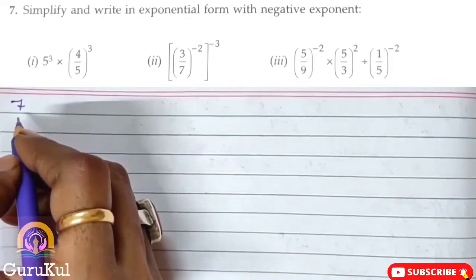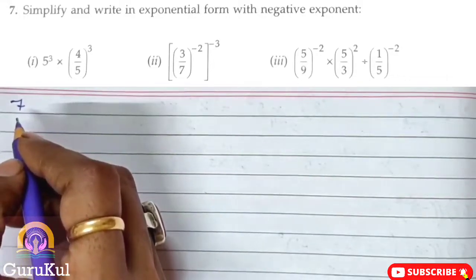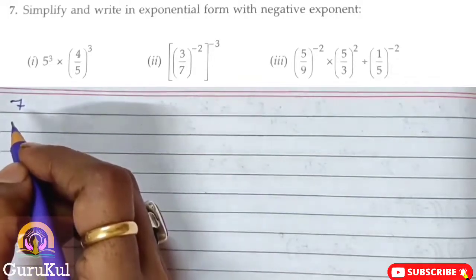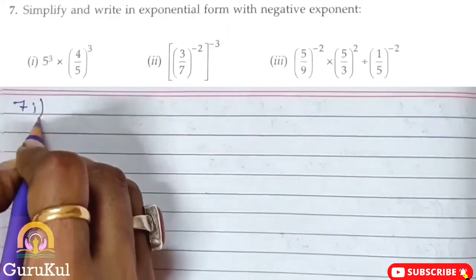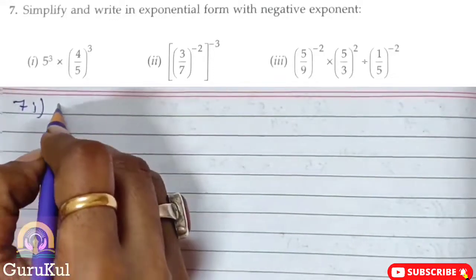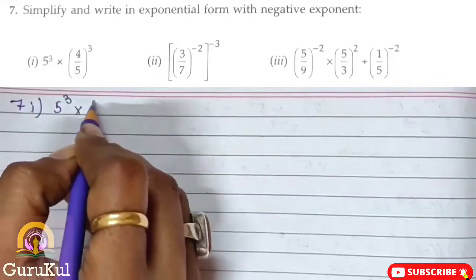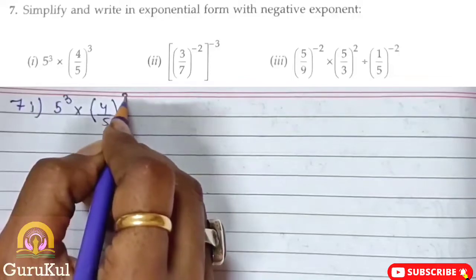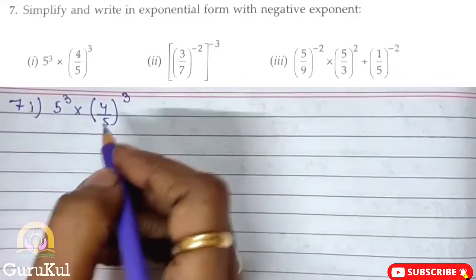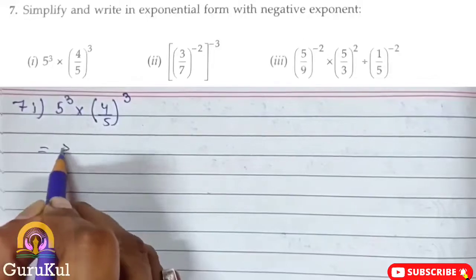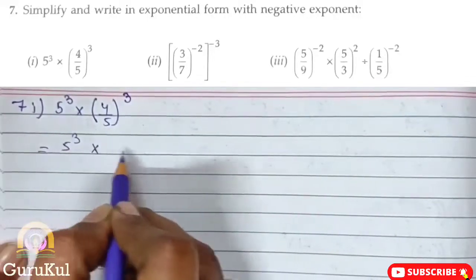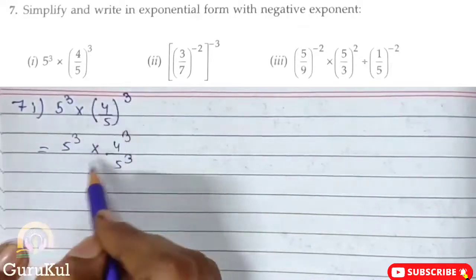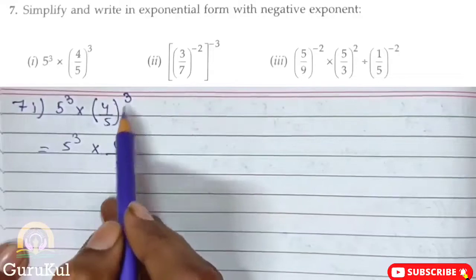Just like we had some numbers 6 and 5, this is the same pattern — I hope you have a clear concept. The first one is 5 to the power 3 into bracket (4/5) close bracket to the power 3. How do we solve this? 5 to the power 3 into 4 to the power 3 and 5 to the power 3 — if you remove the bracket, it means 4 to the power 3 and 5 to the power 3.